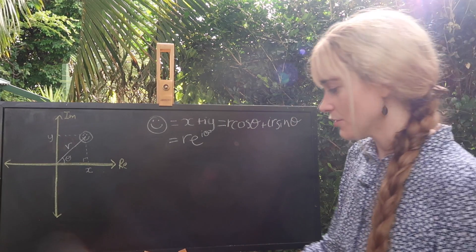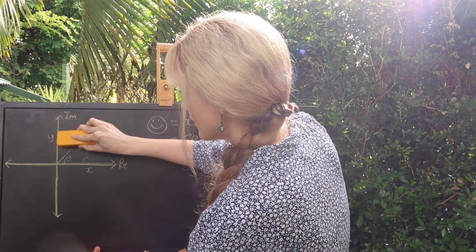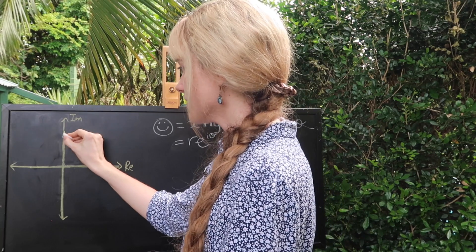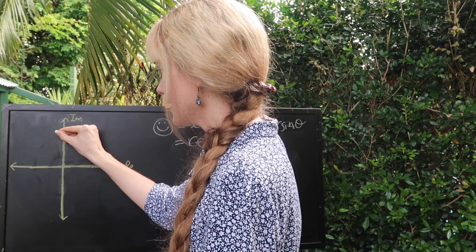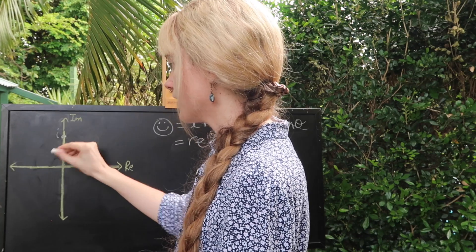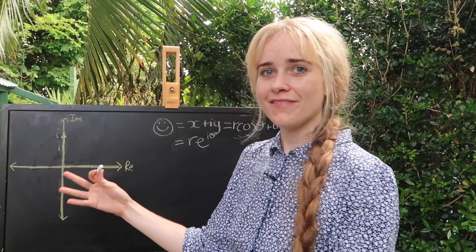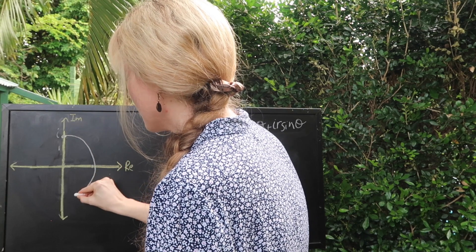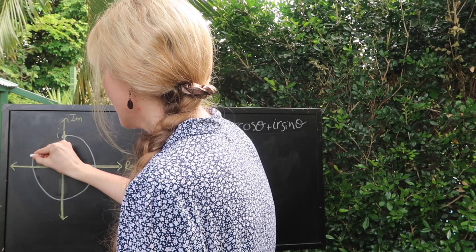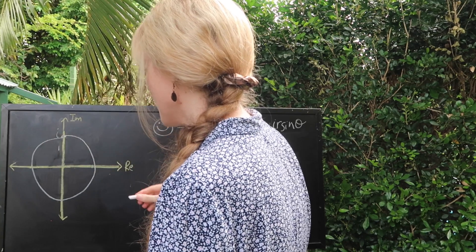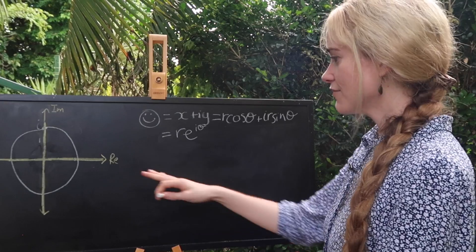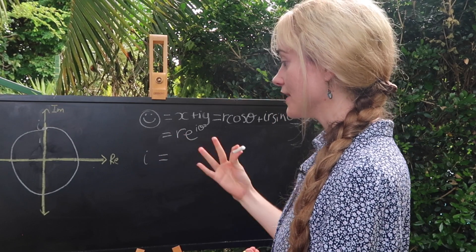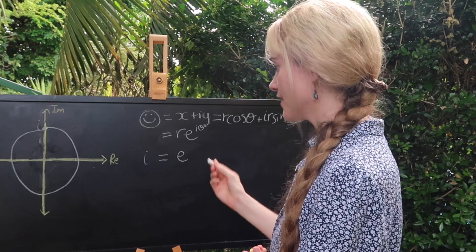If we just want to talk about our friend i for a second we can get rid of all this general case. Well i is going to be up here at a distance of one from the origin. That in fact places i on the unit circle which are the points that are all a distance of one away from the origin. To write down i like this we know that r is going to be equal to one but what is theta going to be?